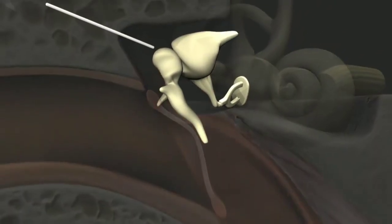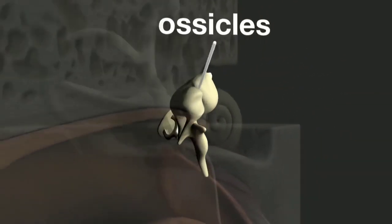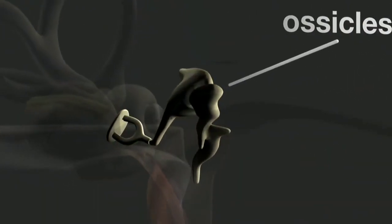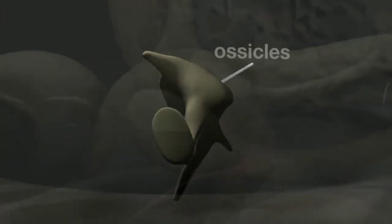The middle ear also contains three small bones known as the ossicles. These are connected in a chain across the middle ear, from the tympanic membrane to the entrance of the cochlea, called the oval window.